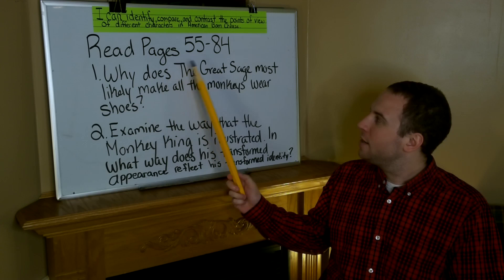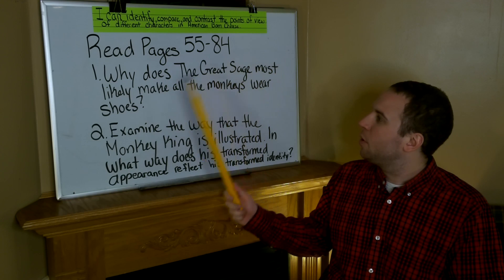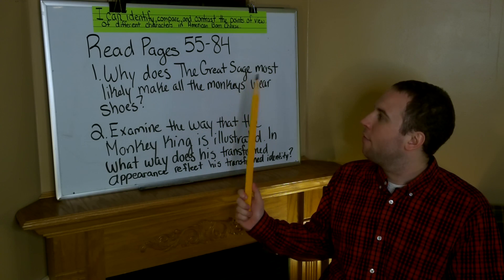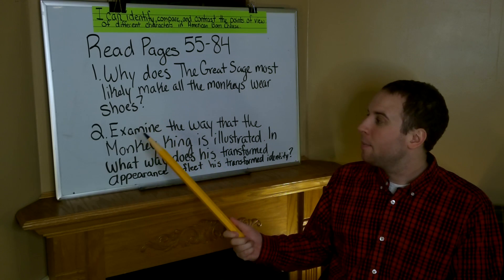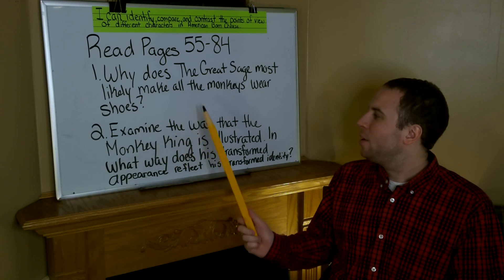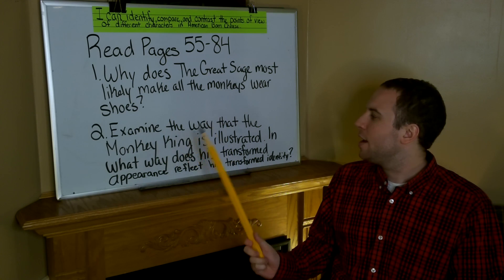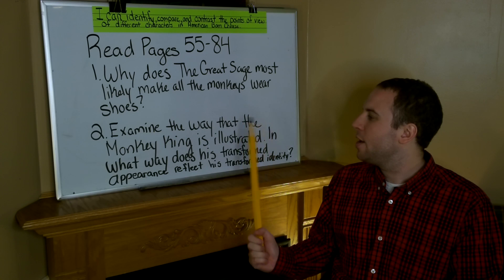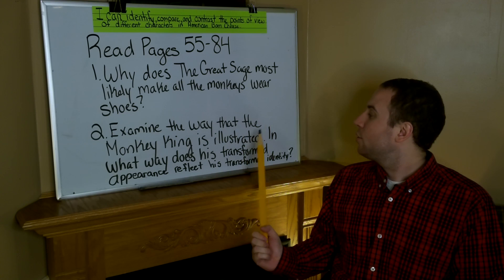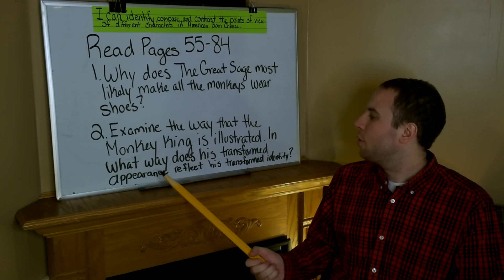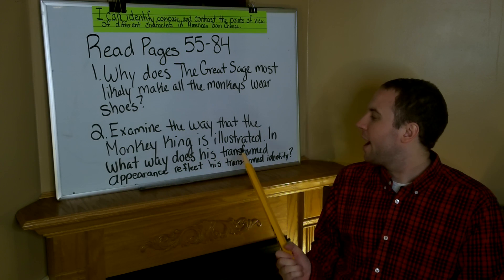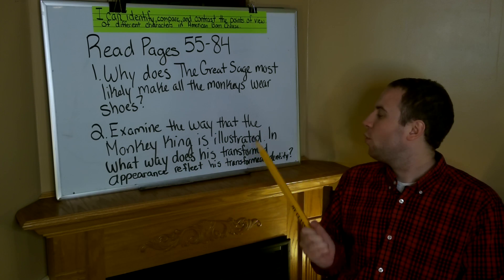Number one, why does the great sage most likely make all the monkeys wear shoes? And number two, examine the way that the Monkey King is illustrated. In what way does his transformed appearance reflect his transformed identity?